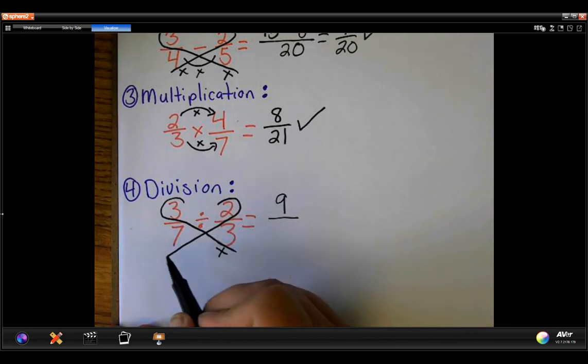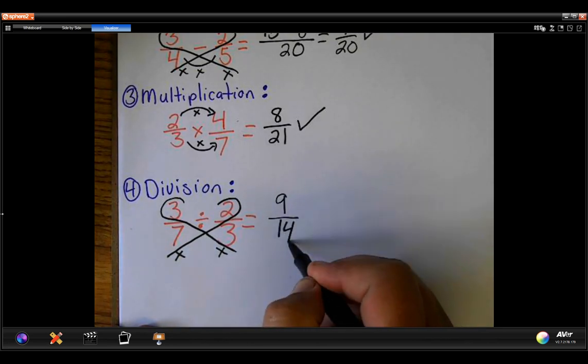Come back this way on the right side. 2 times 7 is 14. Check.